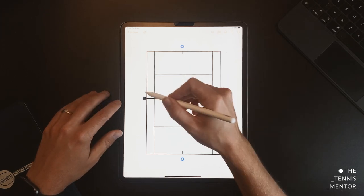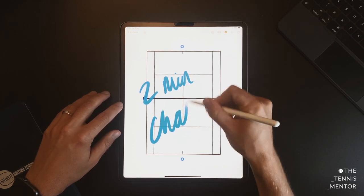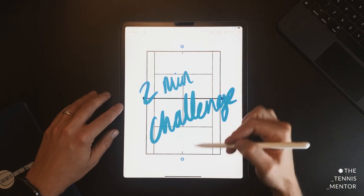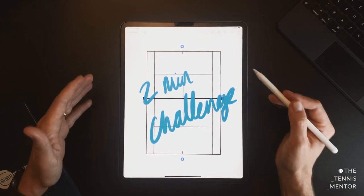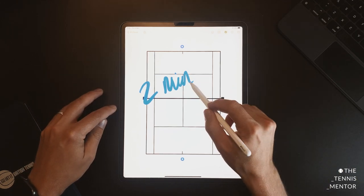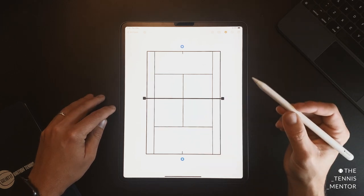The next drill is called the two-minute challenge. Now in this exercise, again, you have two players and this can be done on the full singles court or on half the court as well. And the aim of this exercise is to become consistent and to hit with good length to your shots.